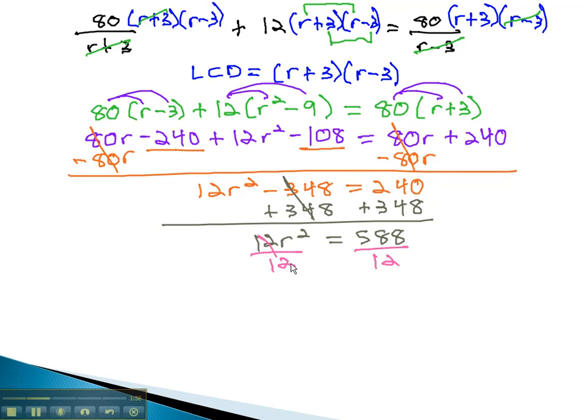Dividing both sides by 12 tells us that r squared is equal to 49. Taking the square root of both sides technically gives us plus or minus 7. However, r is equal to the rate Zoe rows, which would not be negative. So we will say Zoe rows 7 miles per hour.